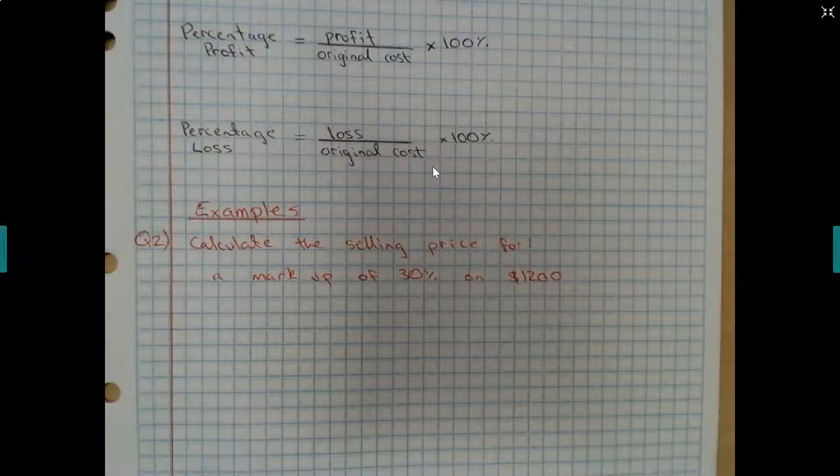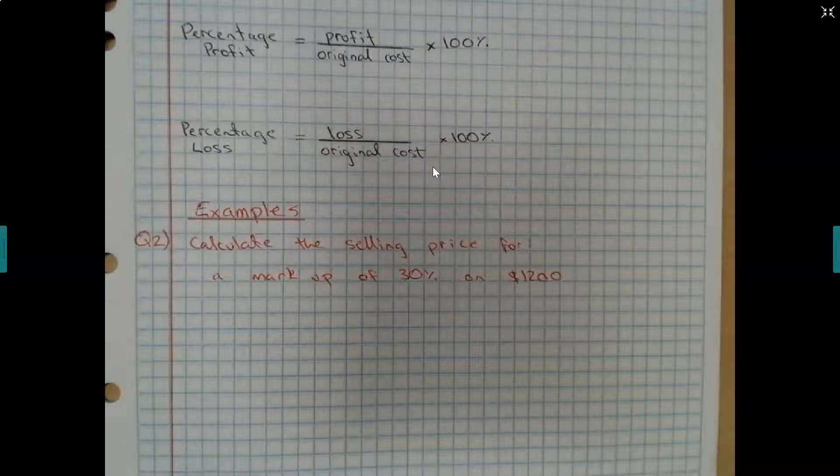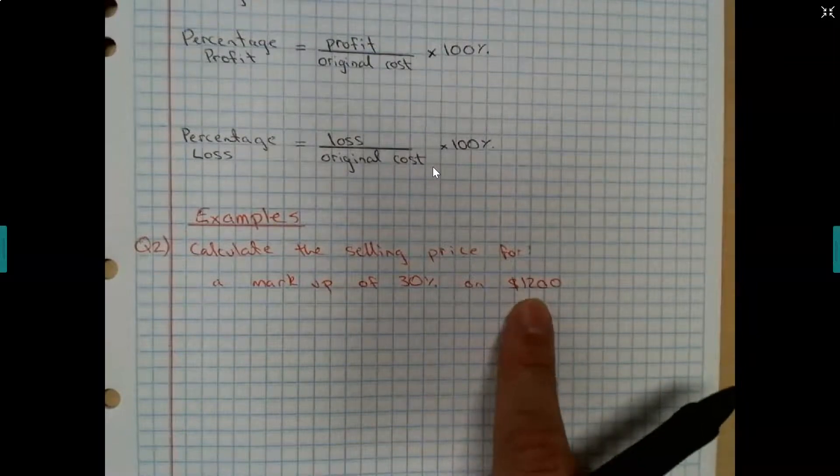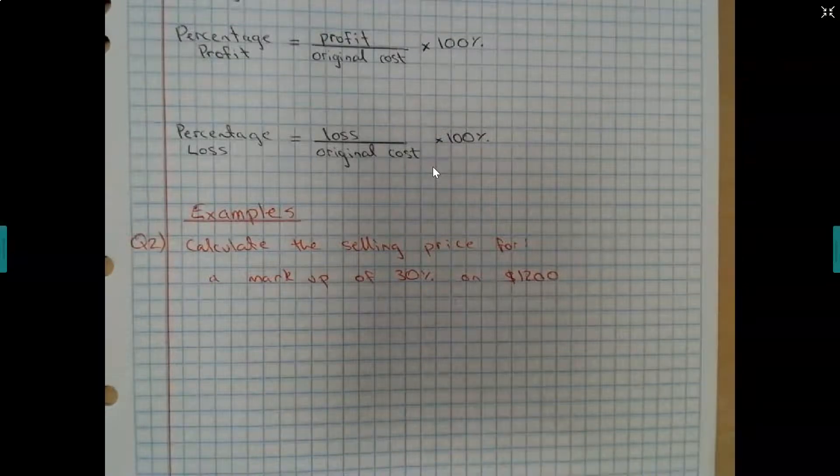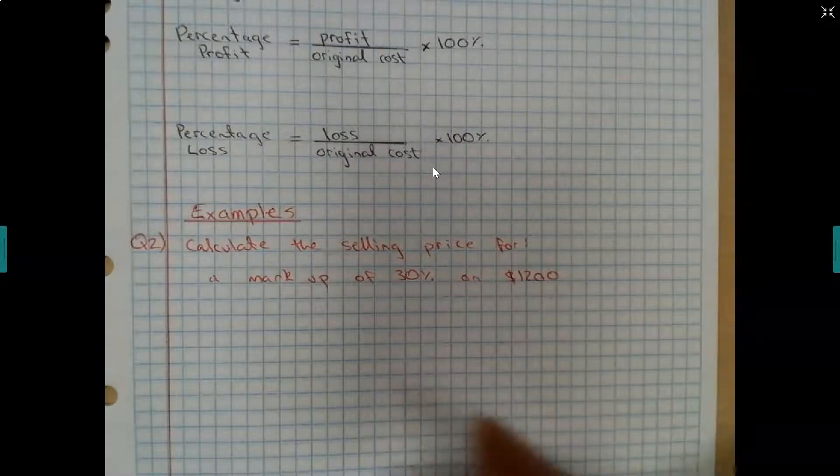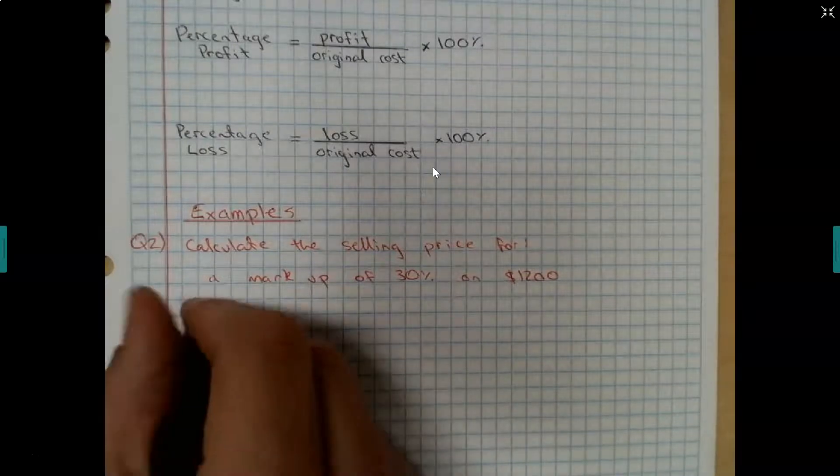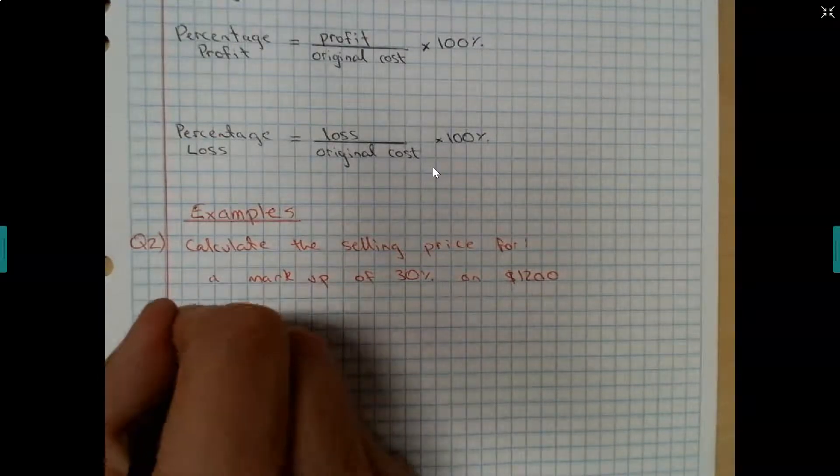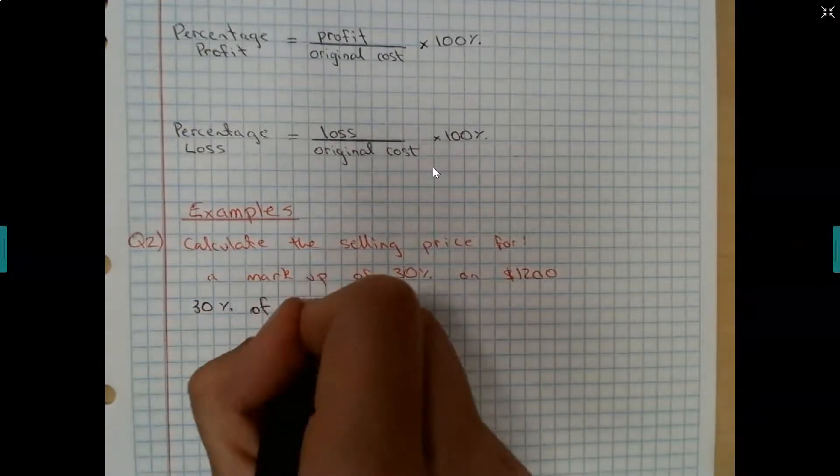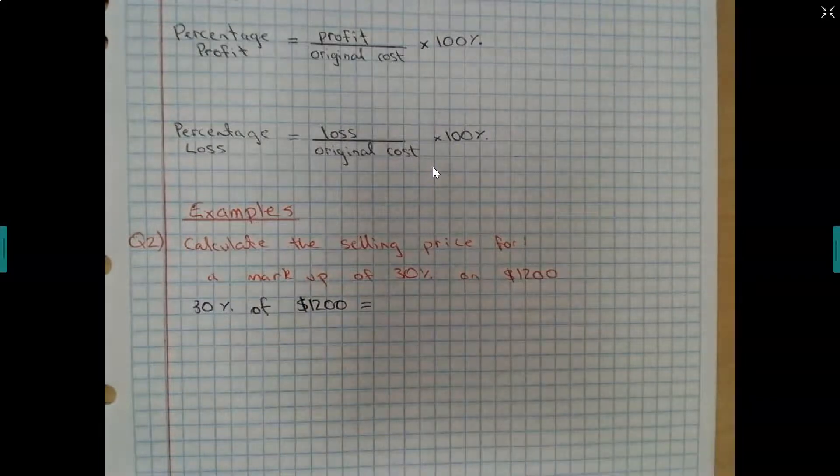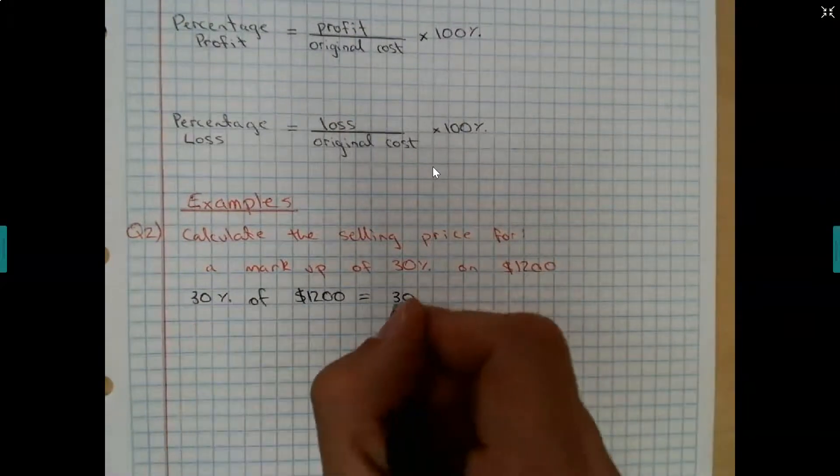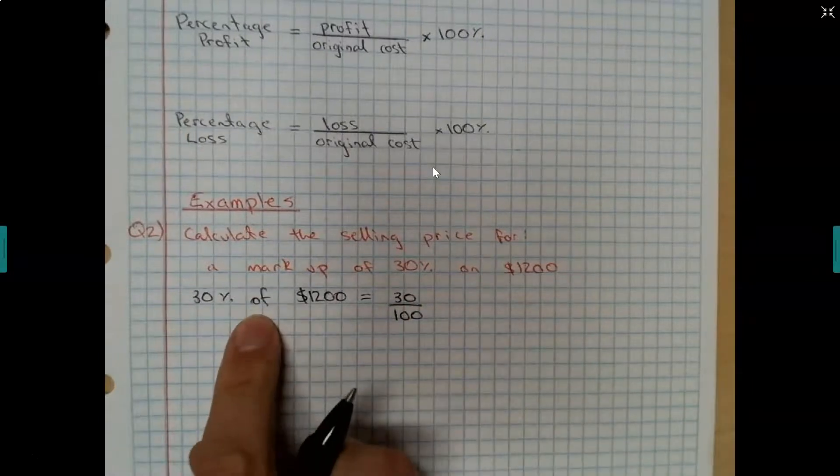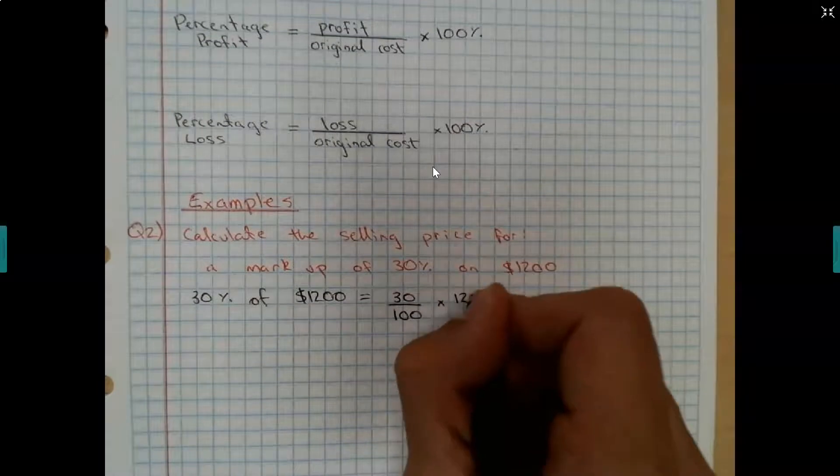So what this is saying is I'm a business owner. I've bought some type of item. I need to make a profit on it. So I do a markup of 30% of what I bought it for, $1,200. To do this, we just are going to work out what 30% of $1,200 is. And then the selling price is going to be $1,200 plus that added 30%. So, 30% of $1,200. So how do I write 30% as a percentage? 30 over 100. And then remember, of means multiply.